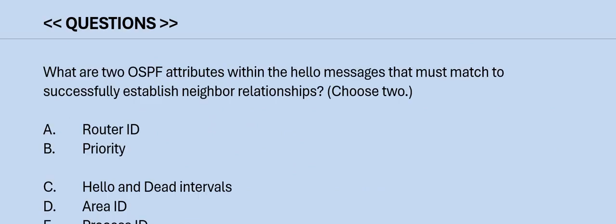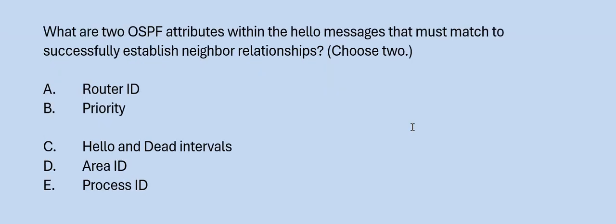Next question: What are the two OSPF attributes within hello messages that must match to successfully establish a neighbor relationship? Choose two. Option A: router ID. Option B: priority. Option C: hello and dead intervals. Option D: area ID. Option E: process ID. The correct answers are Option C and D.